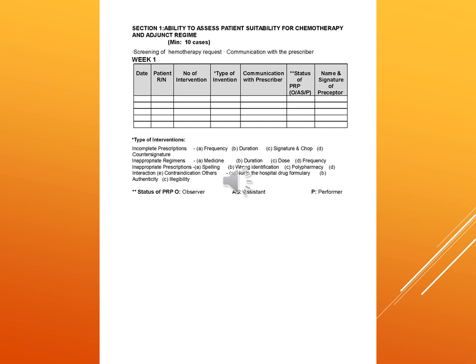Inappropriate dosage forms include issues with medicine, duration, dose, and frequency. Inappropriate prescriptions include spelling errors, wrong identification, polypharmacy, interaction, contraindication, and others such as drugs not in the hospital formulary or issues with legal availability. The status of PRP is recorded as observer, assistant, or performer.